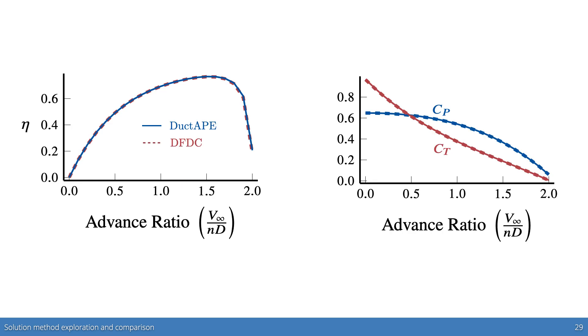In these plots, we see excellent matching between DFDC and duct tape across the entire range of advanced ratios. In fact, both solvers match DFDC within 1.5% at the worst case. The plots for both the DFDC-like solver and our alternate solver are visually identical, so we've only included one set of plots here.